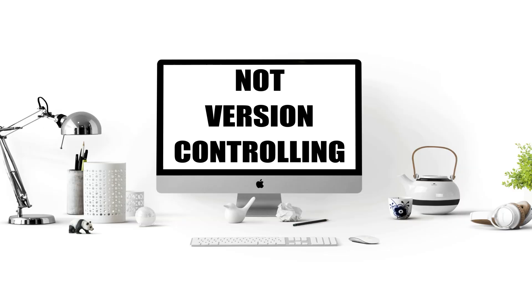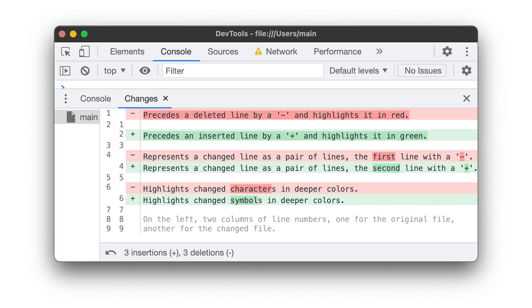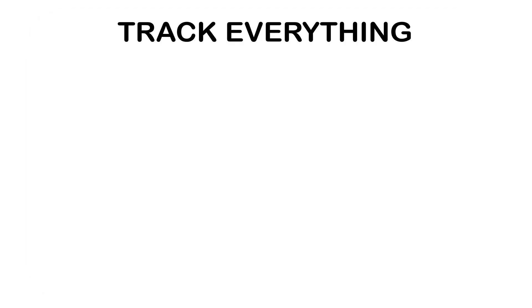Not version controlling. Similarly to good documentation, version control is essential for ML projects. Without it, you can't track which code changes led to better results, reproduce past experiments, or collaborate effectively with teammates. Track everything.